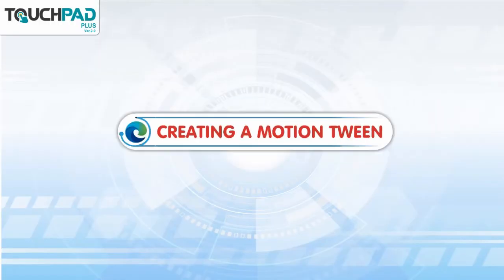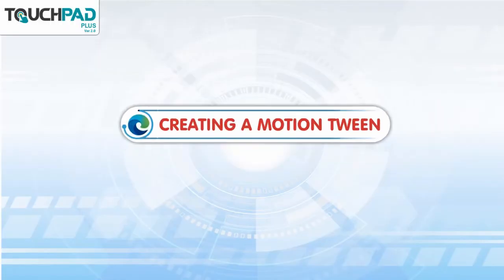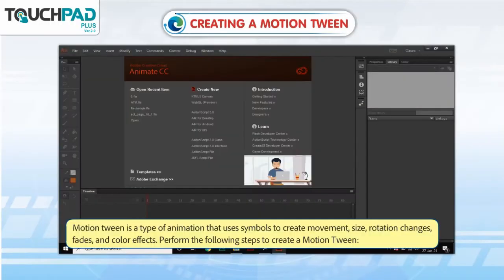Creating a Motion Tween. Motion Tween is a type of animation that uses symbols to create movement, size, rotation changes, fades and color effects. Perform the following steps to create a motion tween.